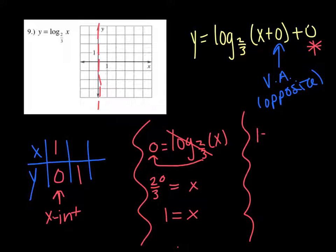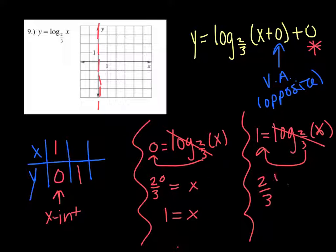Now let's plug in 1 for y. 1 = log base 2/3 of x. 2/3 comes over, log is gone. 2/3 to the first power equals x. 2 to the first over 3 to the first is still just 2/3. You could plug in more points, but I don't need a lot of points. 2 is fine.